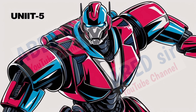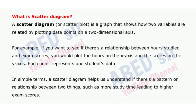Next, fifth unit. First important short question: What is a scatter diagram? A scatter diagram or scatter plot is a graph that shows how two variables are related by plotting data points on a two-dimensional axis. For example, if you want to see if there's a relationship between hours studied and exam scores, you would plot the hours on the x-axis and the scores on the y-axis — each point represents one student's data. In simple terms, a scatter diagram helps us understand if there's a pattern or relationship between two things, such as more study time leading to higher exam scores.